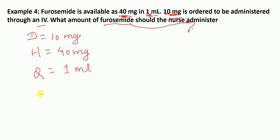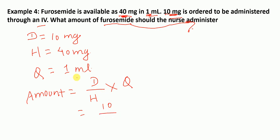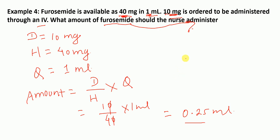The amount administered equals amount desired divided by amount on hand times quantity Q: 10 divided by 40 times 1 mL. Simplifying, 10/40 reduces to 1/4. One divided by 4 equals 0.25 mL. Therefore the nurse should administer 0.25 mL. These are the examples of drug dose calculations — use your calculator when needed. I hope this video was helpful. Thank you very much for your attention.